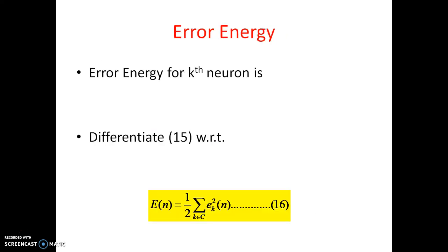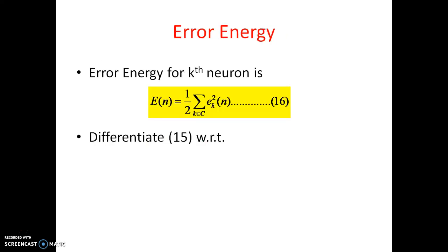Now let us proceed with this. This is the error energy capital E of N is equal to half sigma k belongs to C E k square of N. That means this is the error energy for kth neuron. So everything should be in k and this is named as 16. So let's differentiate this one. Let's differentiate the equation 16 with respect to Yj of N.